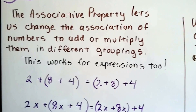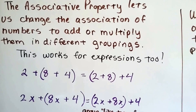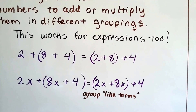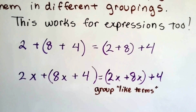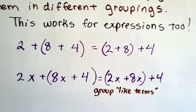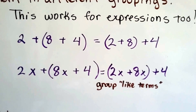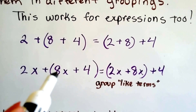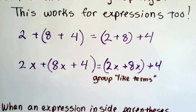The associative property lets us change the association of numbers to add or multiply them in different groups, and this works for expressions too. The associative property of addition says that we can have 2 plus 8 plus 4, and we can group the 2 and the 8 together to make a 10. When we have an algebraic expression, we can group the 2x and the 8x together because they're like terms, and then add the 4.